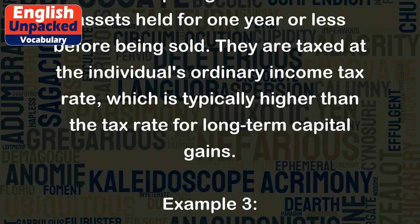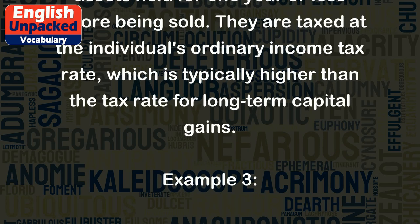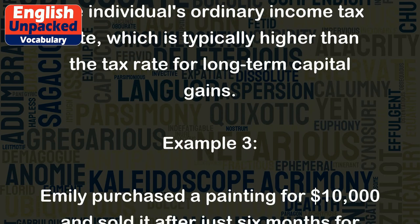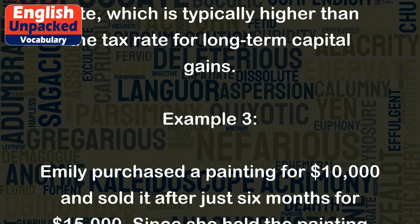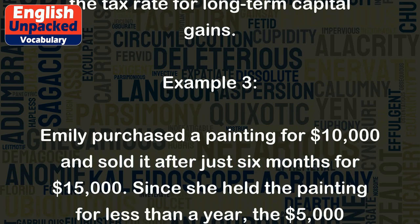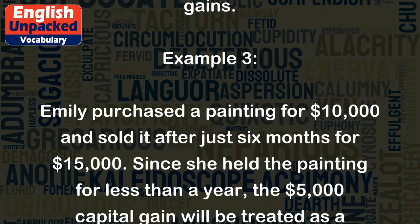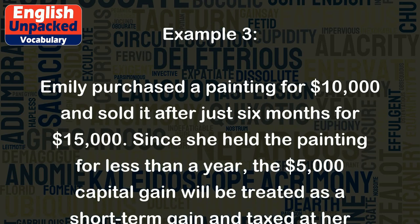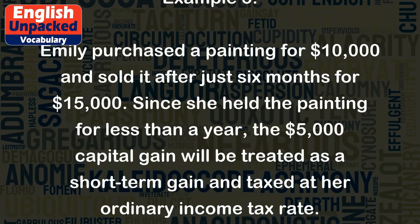They are taxed at the individual's ordinary income tax rate, which is typically higher than the tax rate for long-term capital gains. Example 3. Emily purchased a painting for $10,000 and sold it after just six months for $15,000.